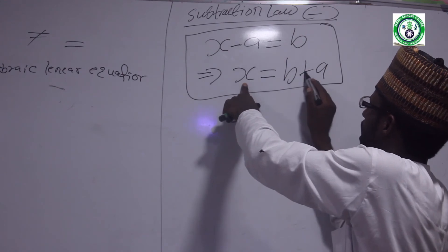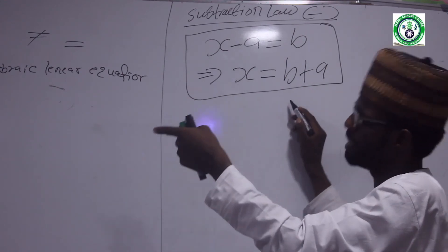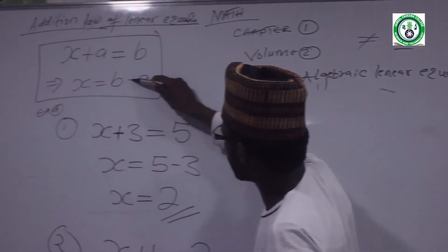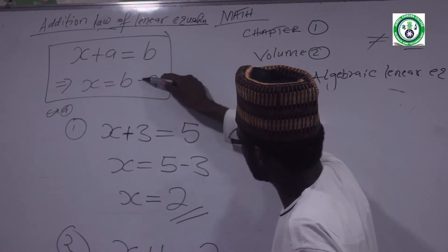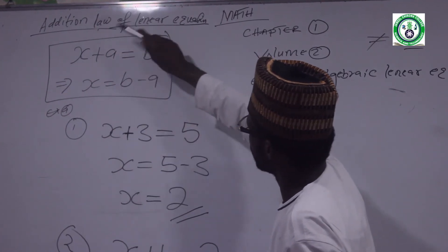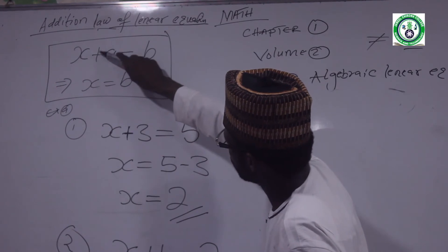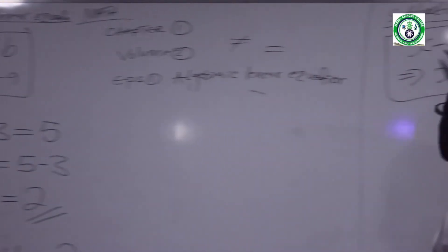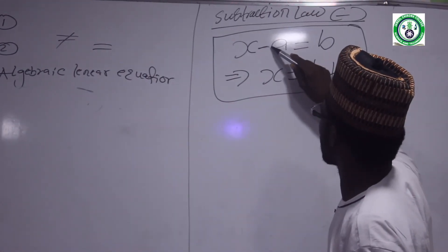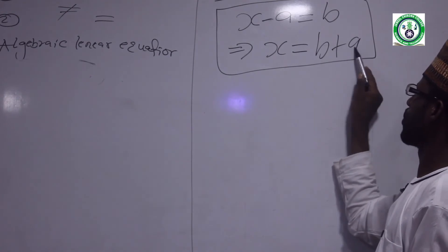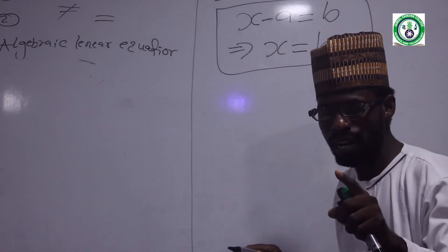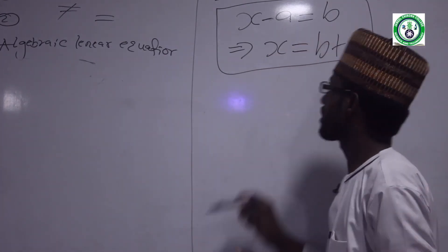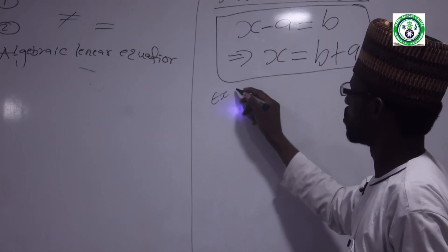From the left, minus A becomes plus A on the right. For addition: if you add on one side, it subtracts on the other — addition and subtraction are inverse operations. Addition moves across as subtraction; subtraction moves across as addition. There is a relationship between them.